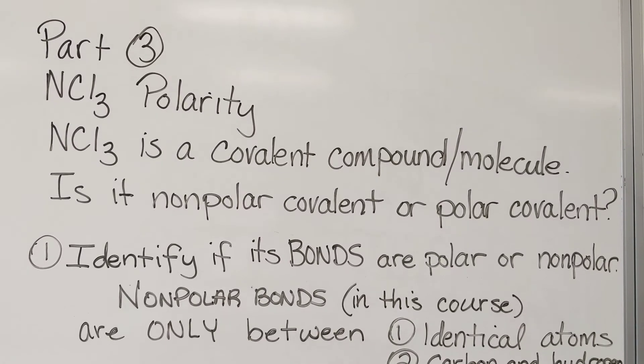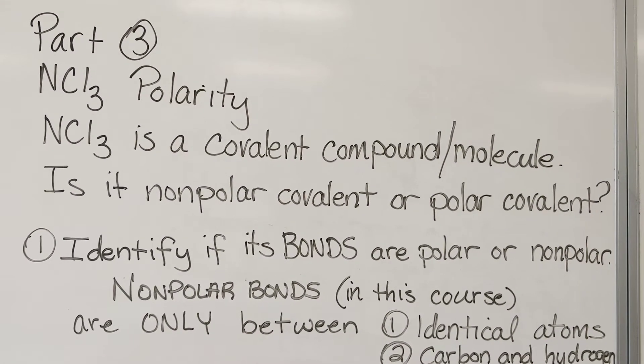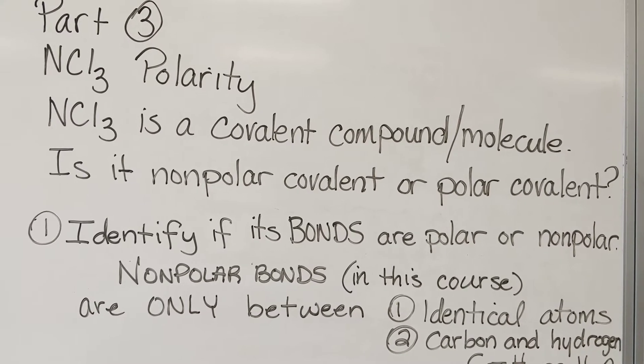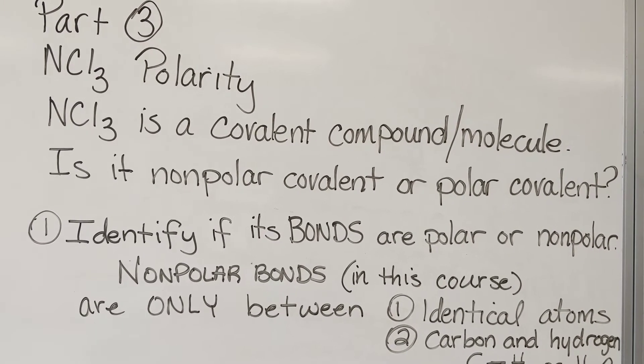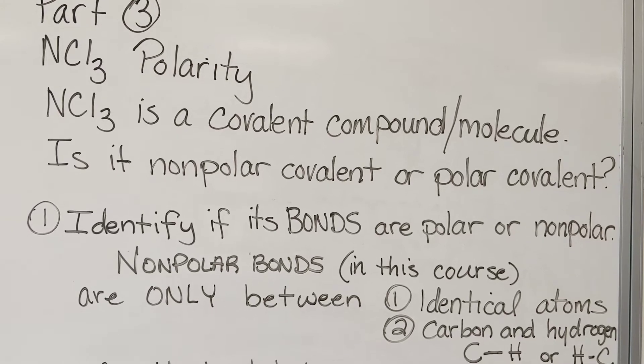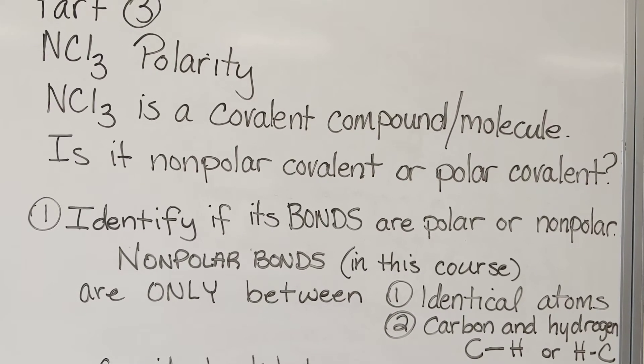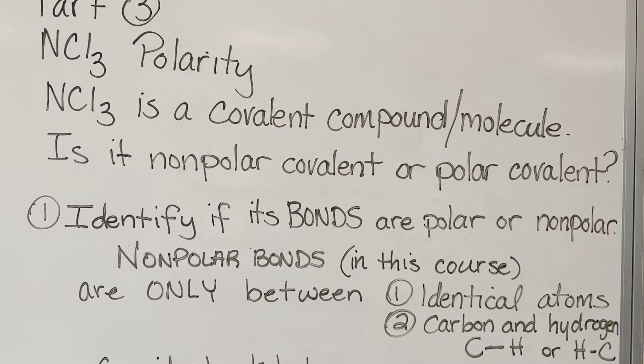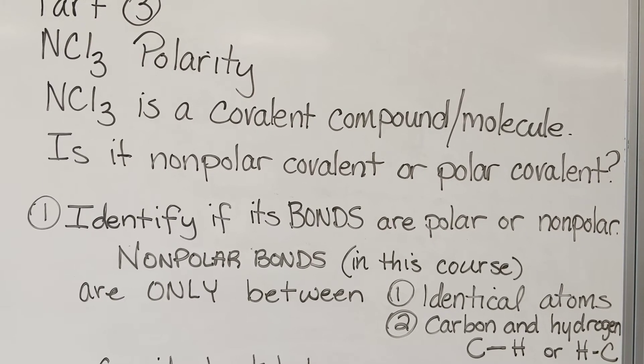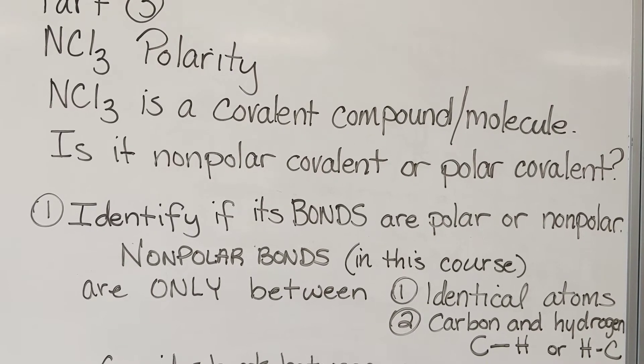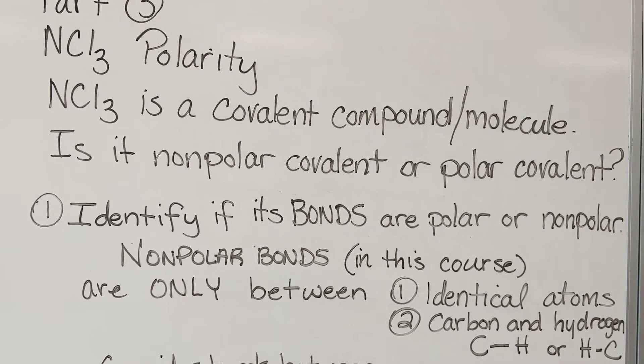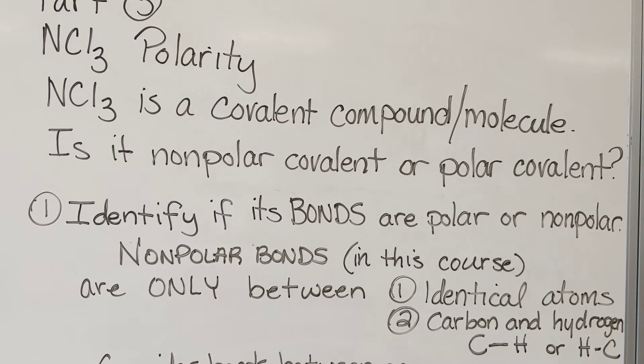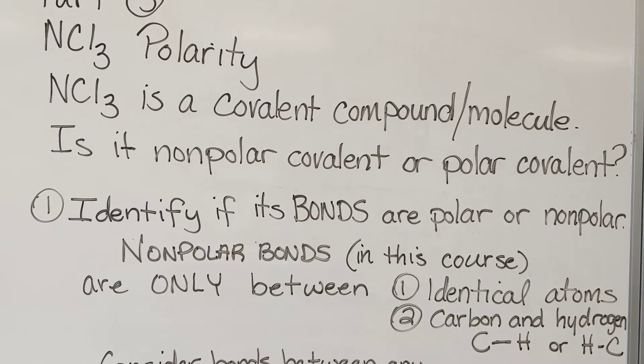The first step will be to identify if its bonds are polar or nonpolar. Nonpolar bonds in this course are only between identical atoms or between carbon and hydrogen. So if you have a carbon directly bonded to hydrogen or hydrogen directly bonded to carbon, those are nonpolar bonds. The electrons in the bonds will be shared equally. Or if it was two carbon atoms or two hydrogen atoms, they would share electrons evenly in their bonds.